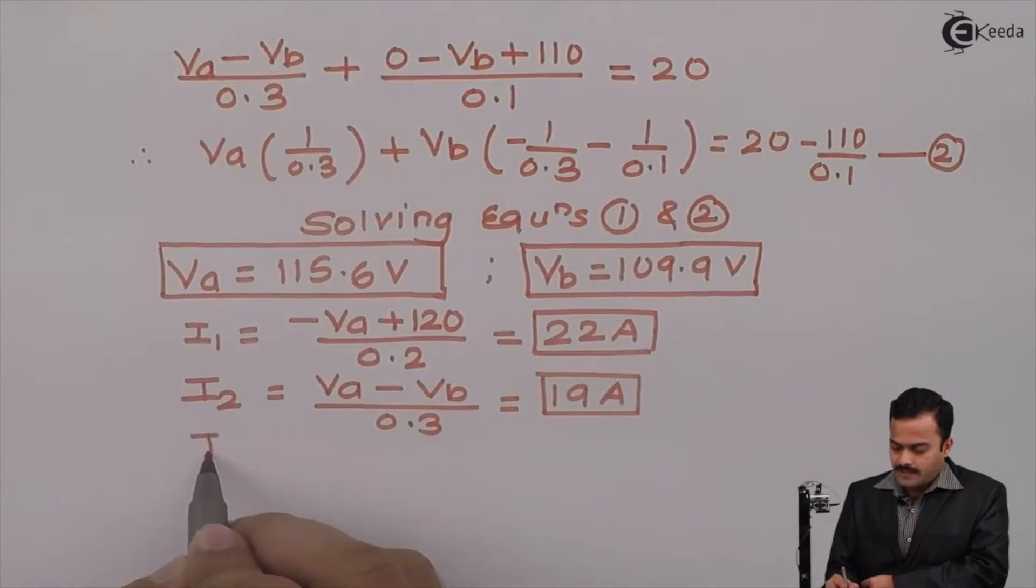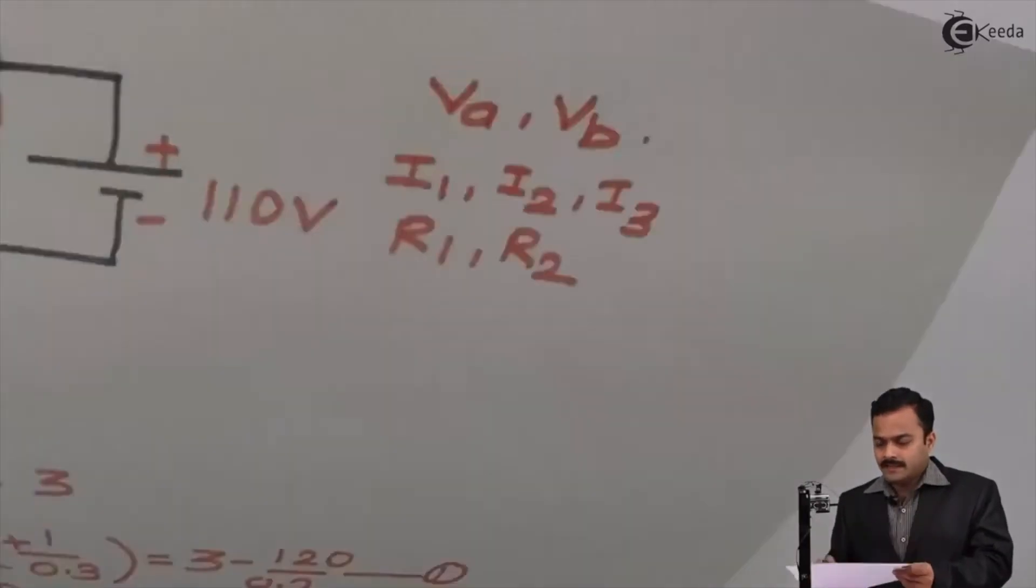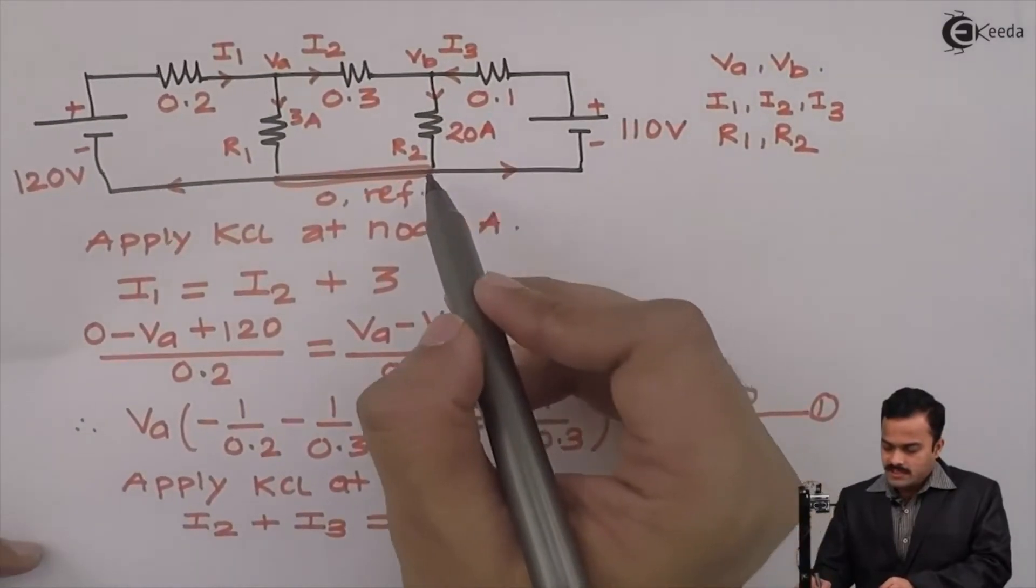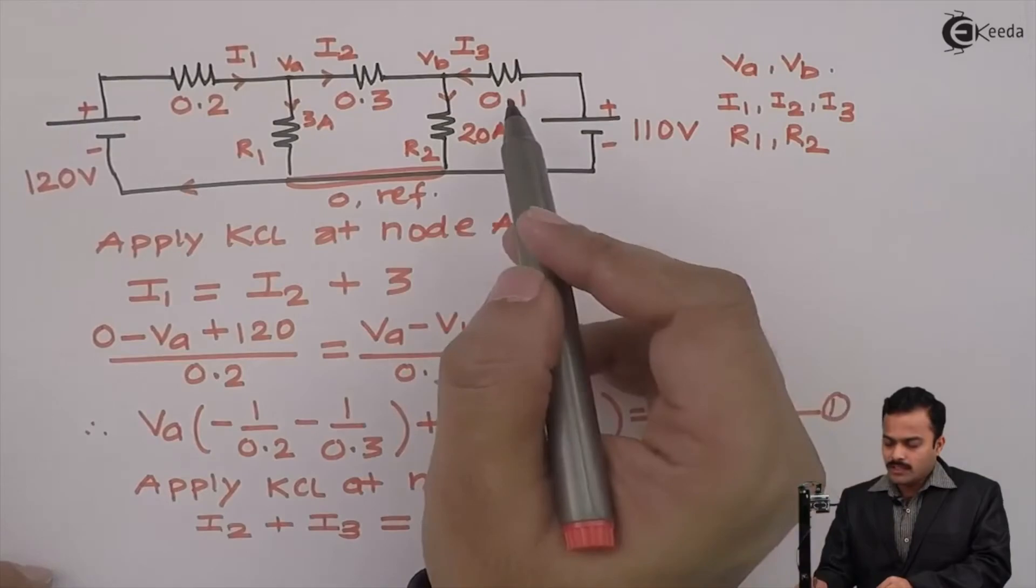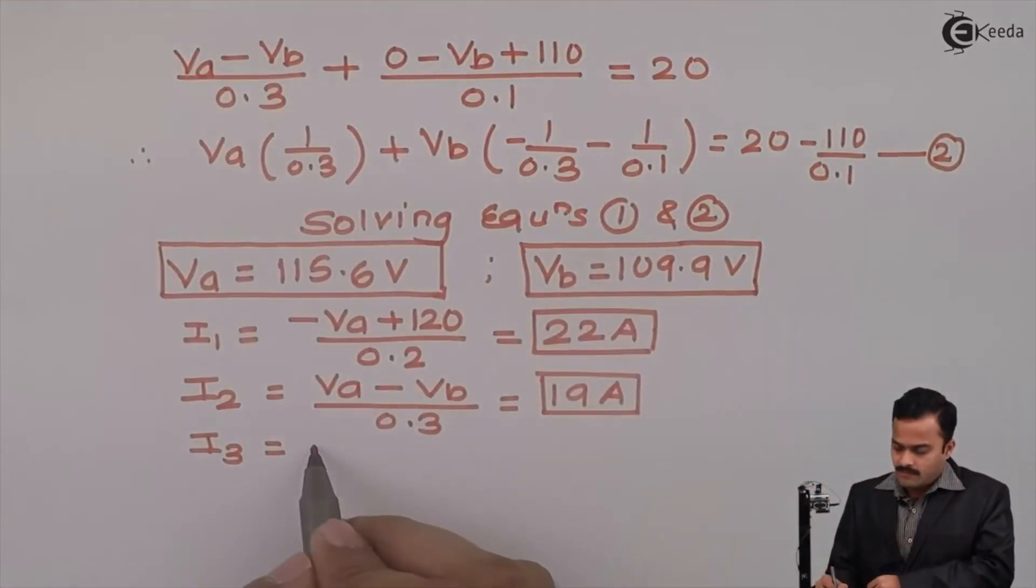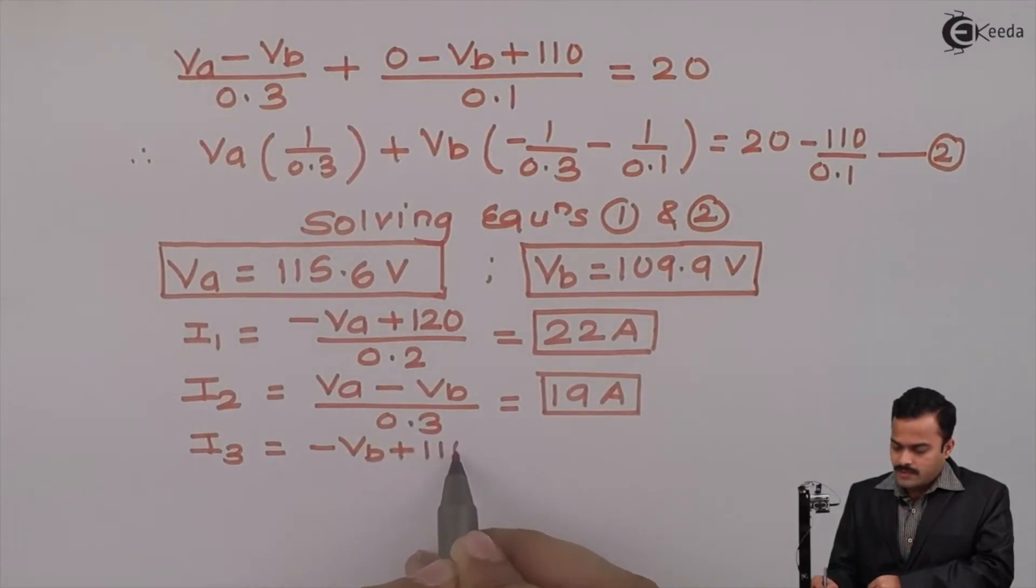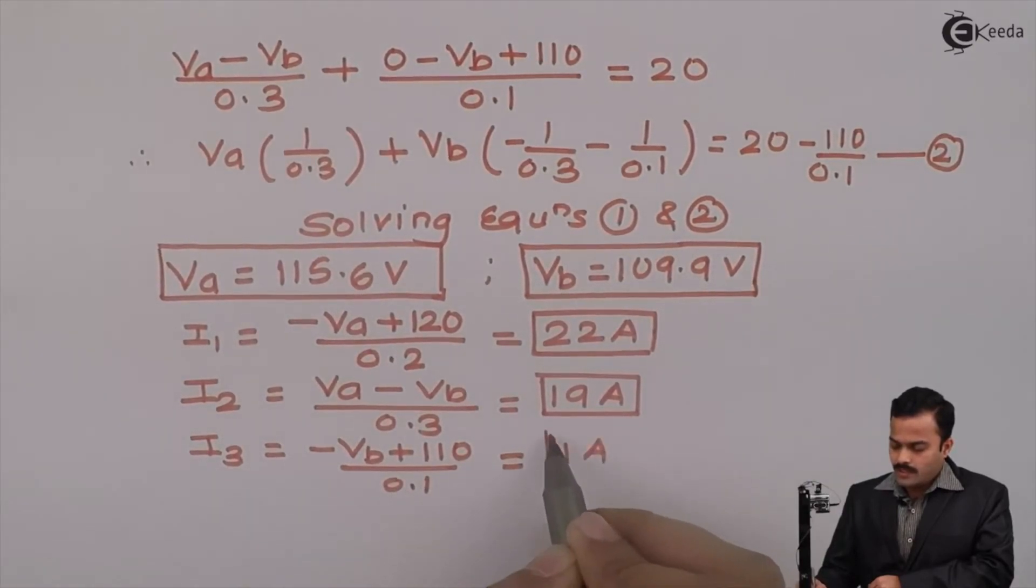And finally, I3. Again I3 equals 0 minus Vb plus 110 divided by 0.1. So, it is minus Vb plus 110 divided by 0.1. The answer you will get is 1 Ampere.